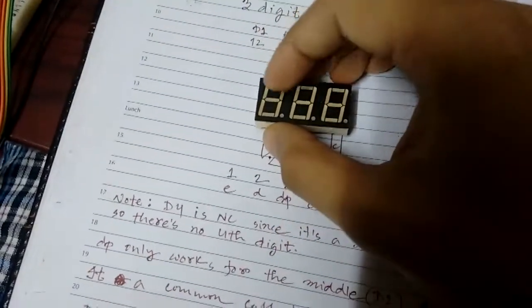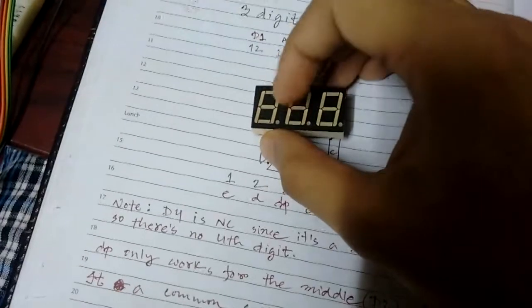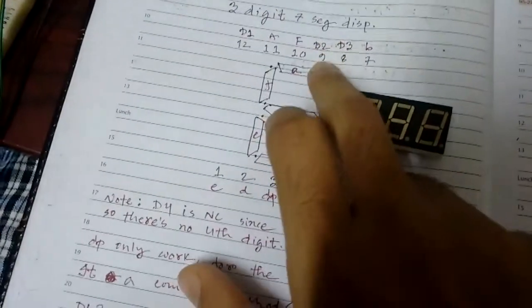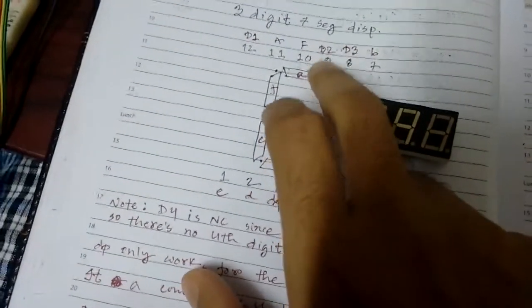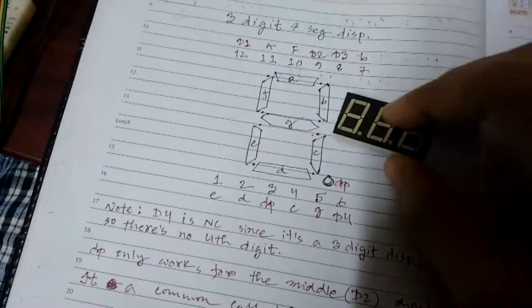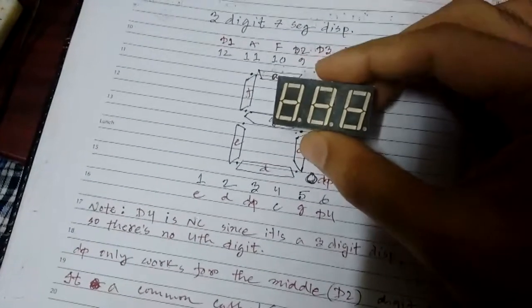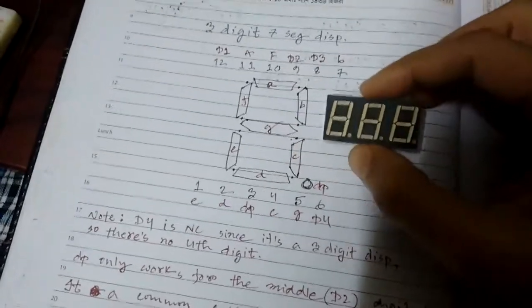And if I provide VCC through a resistor to A, then the A segment - this top right one - lights off of digit one. And if I switch to D2, if I provide ground here, the A segment of the second display lights up.